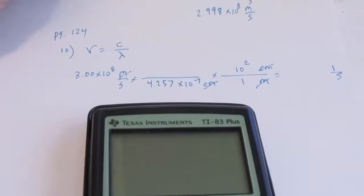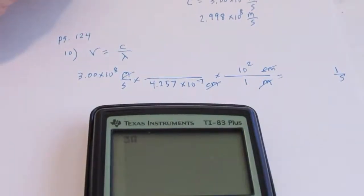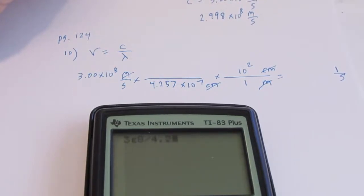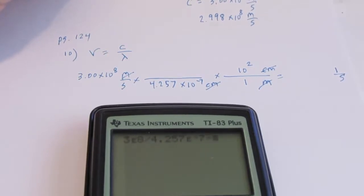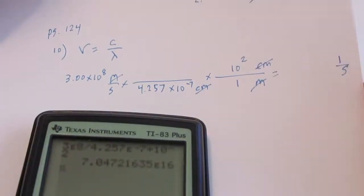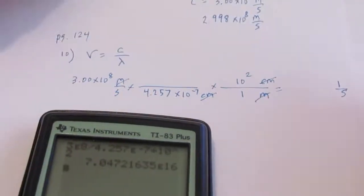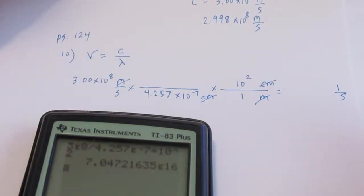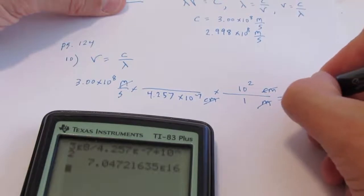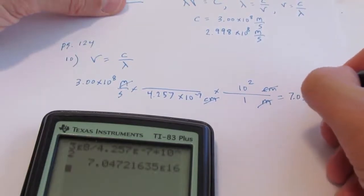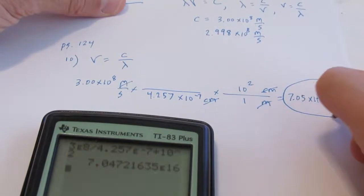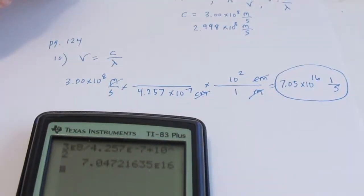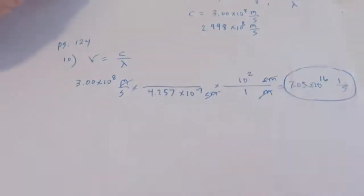Let's see what we get here. We have 3.00 times 10 to the eighth divided by 4.257 times 10 to the negative seventh, times 100. And so I get 7.05 — I'm only allowed three sig figs — times 10 to the sixteenth. So 7.05 times 10 to the sixteenth cycles per second. Don't make this any harder than it is. It's pretty straightforward.